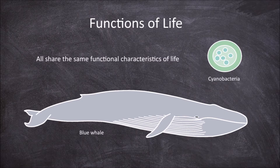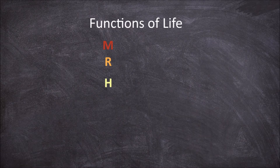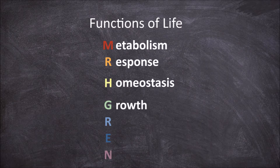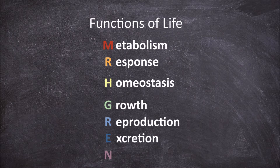These characteristics can be remembered by the mnemonic Mr H Gren. This stands for metabolism, response, homeostasis, growth, reproduction, excretion, and nutrition.